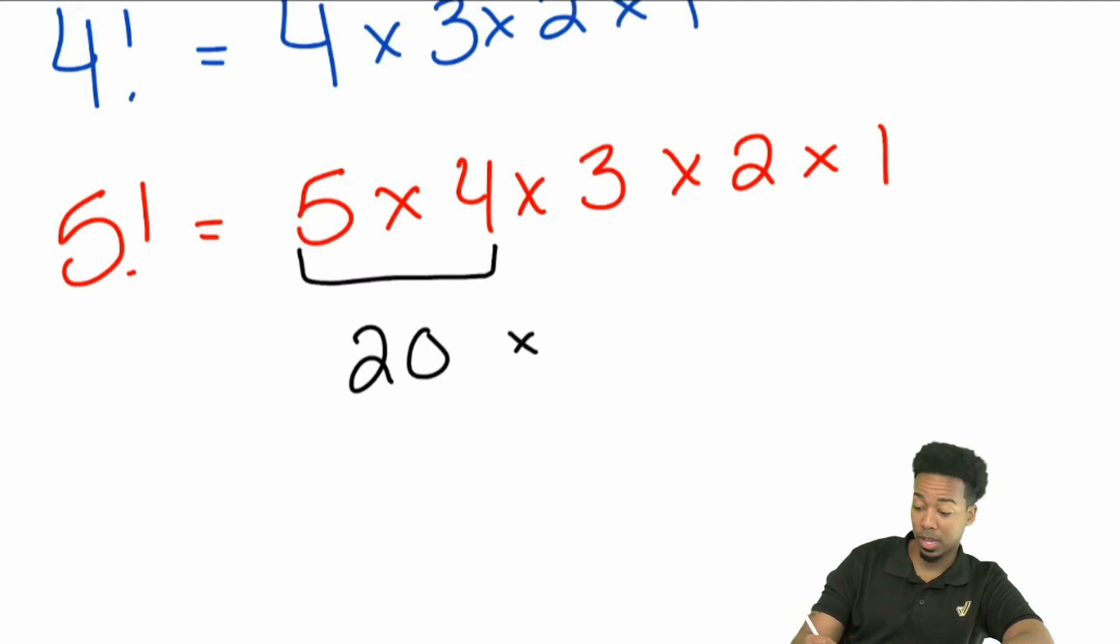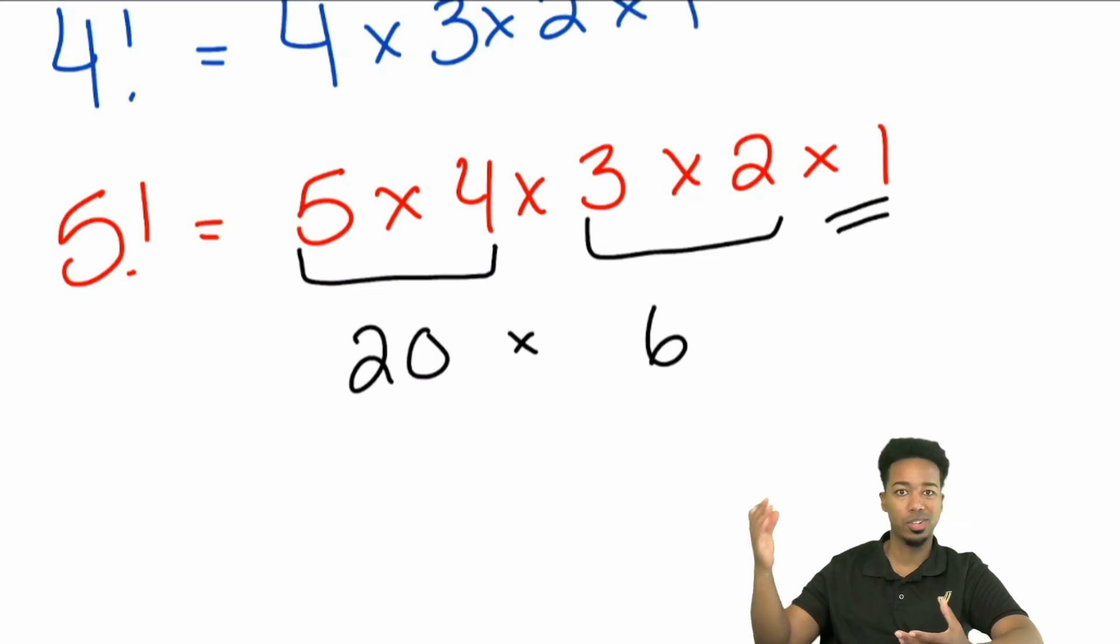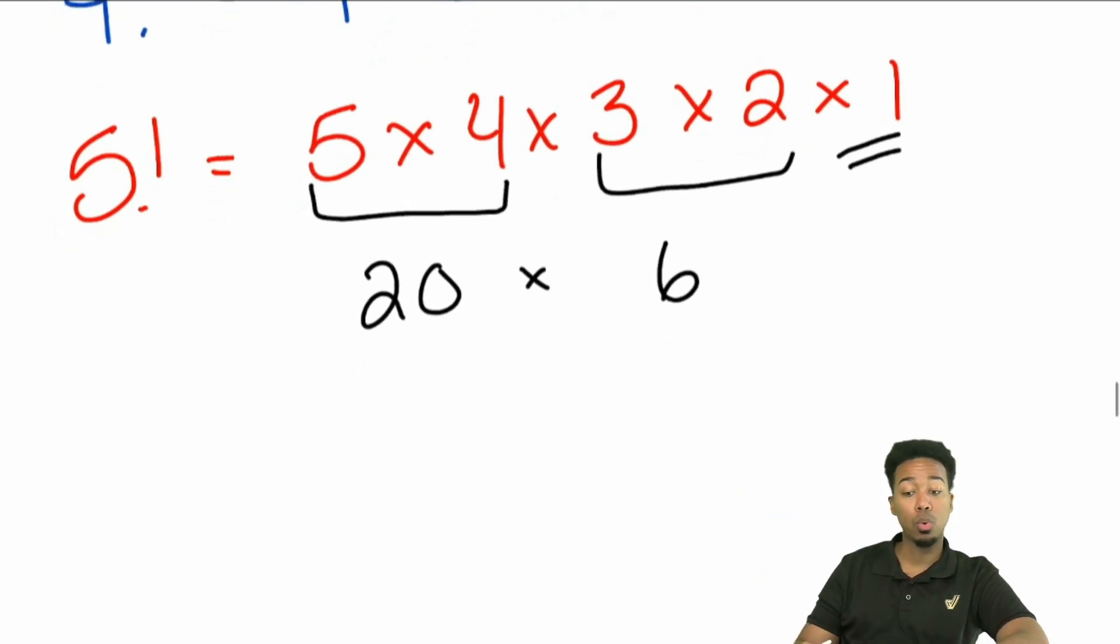And then if you wanted to, you could just say, hey, what's three times two? That's going to be six. And again, multiplying by one is just going to keep it the same. Six times one is six, whatever.